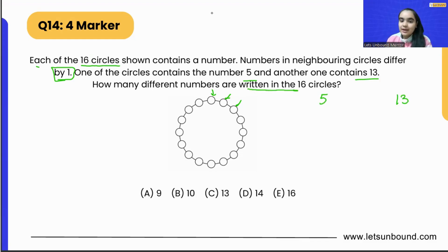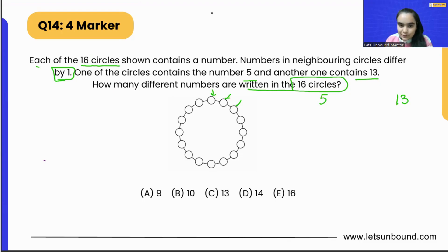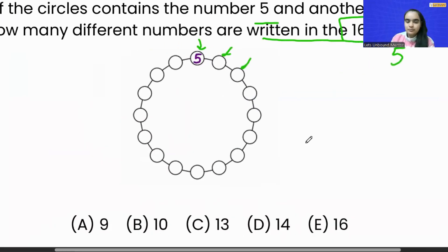So how many different numbers are written on these 16 circles? Pretty interesting and easy. So let's assume I'm putting 5 over here, the smaller number. Let me zoom in a little bit so that it's more clear. I'll put 5 over here.